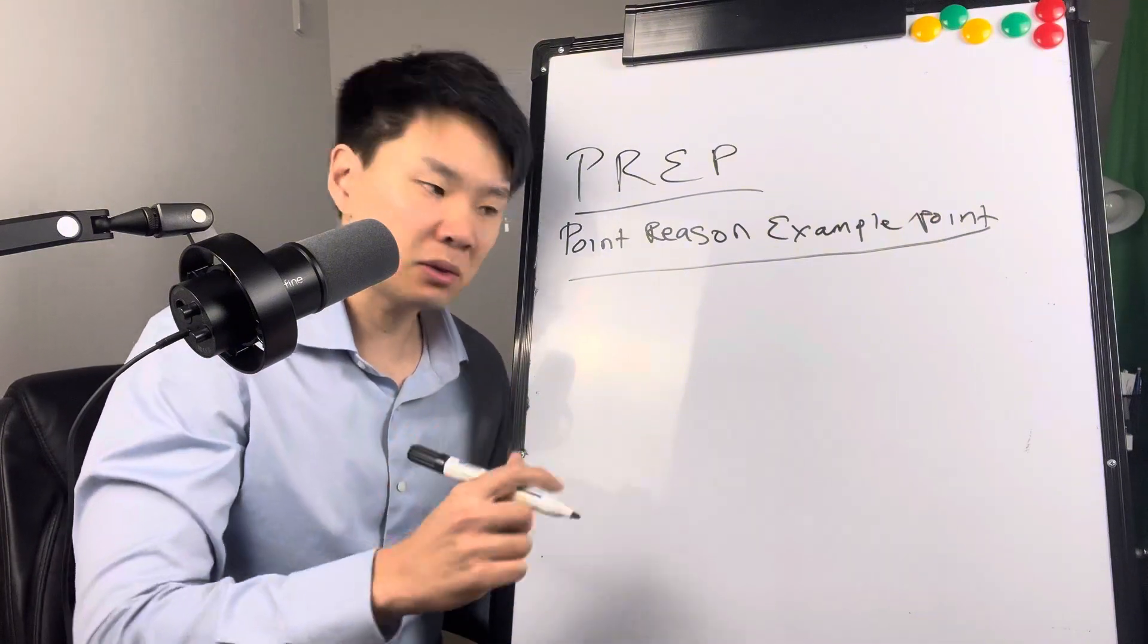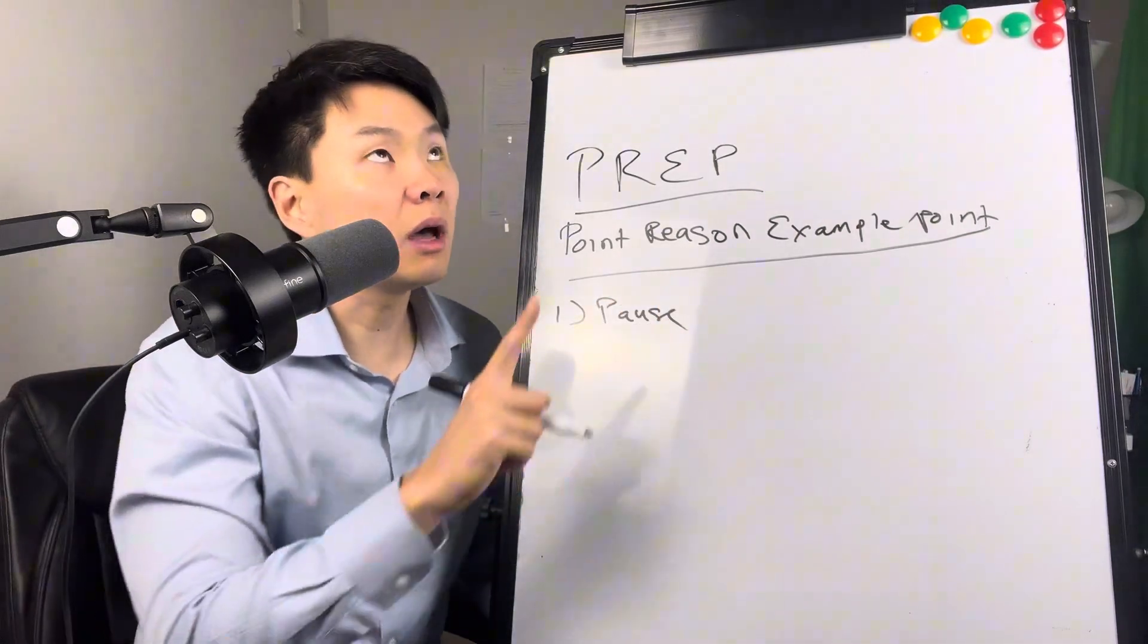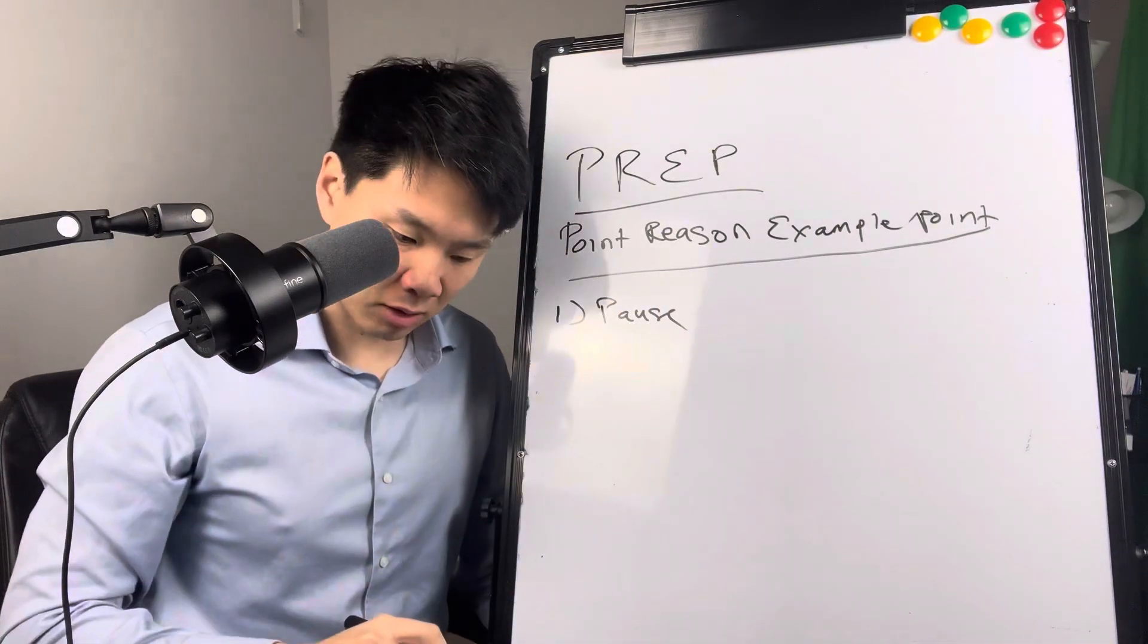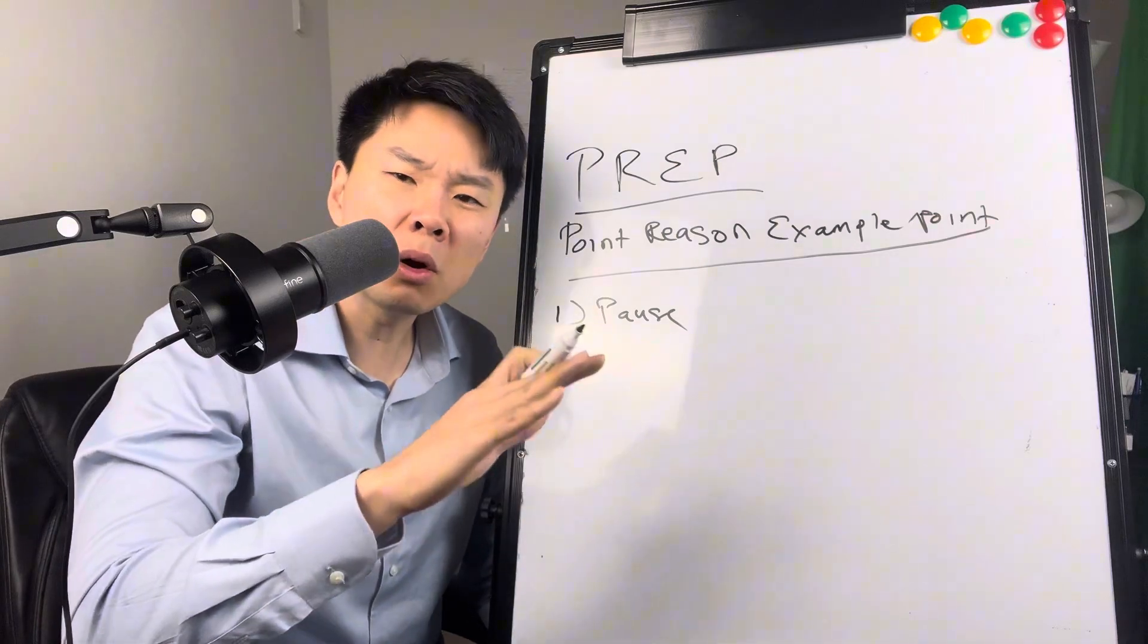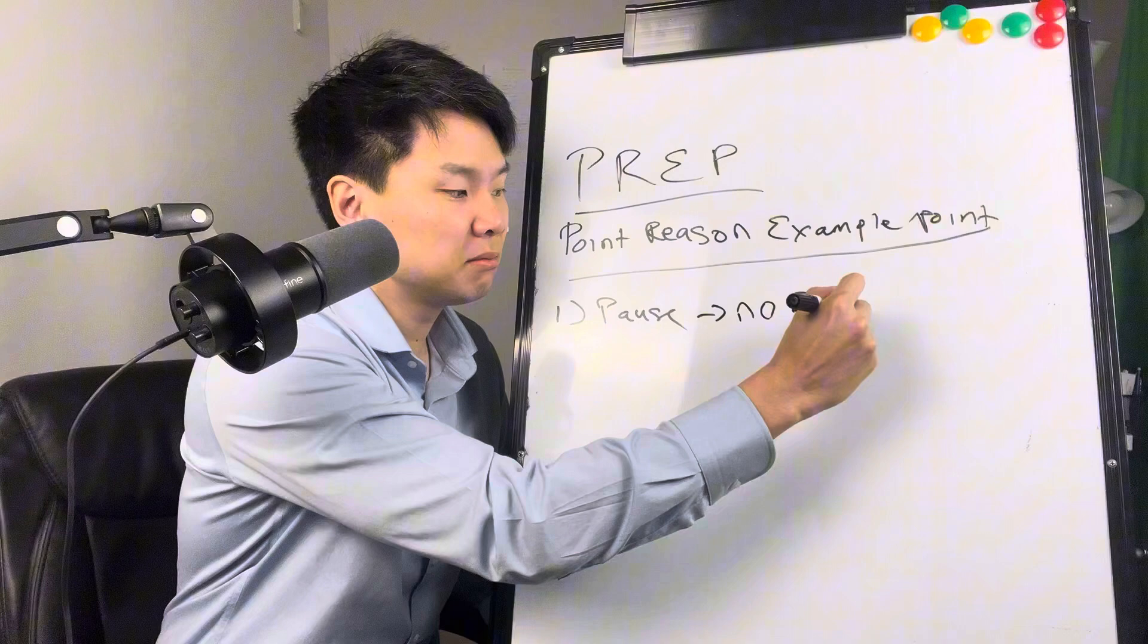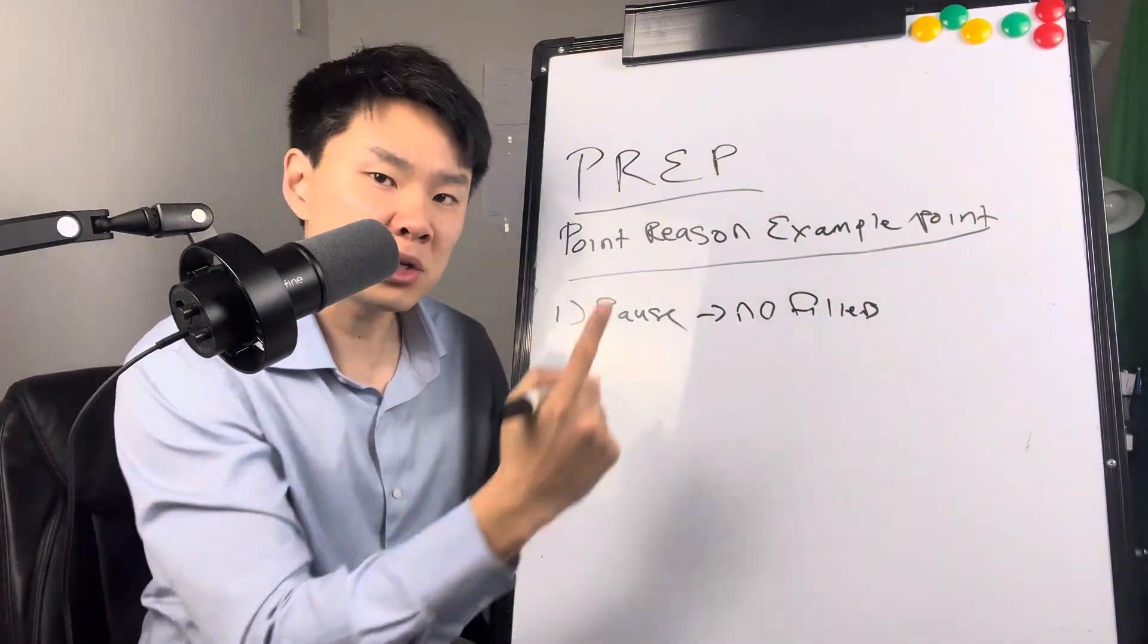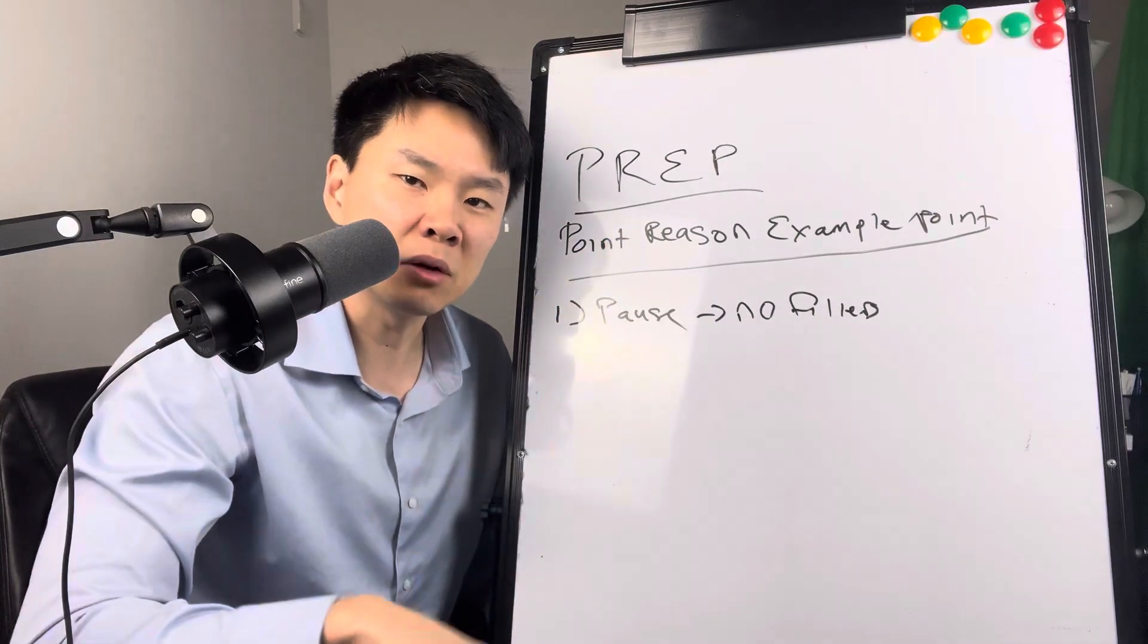The first thing you would do is you would pause. You would pause and you would look up, not down, but look up. Do not say a word. I do not want you to say no fillers. And I want you to show that you're confident, that you're being thoughtful, which is why you're looking up rather than looking down.